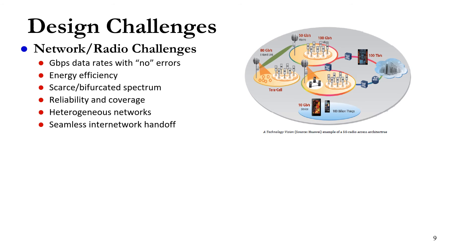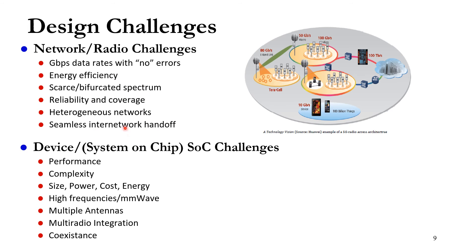With this historical growth come new challenges. Network and radio challenges include: data rate — how many gigabits per second we can support without errors; energy efficiency — can we communicate with the least required energy; scarce spectrum; reliability for critical operations such as health applications; coverage; heterogeneous networks where Wi-Fi, cellular, Bluetooth, and others must communicate together; and seamless network handoff so users feel no disconnection when moving locations.